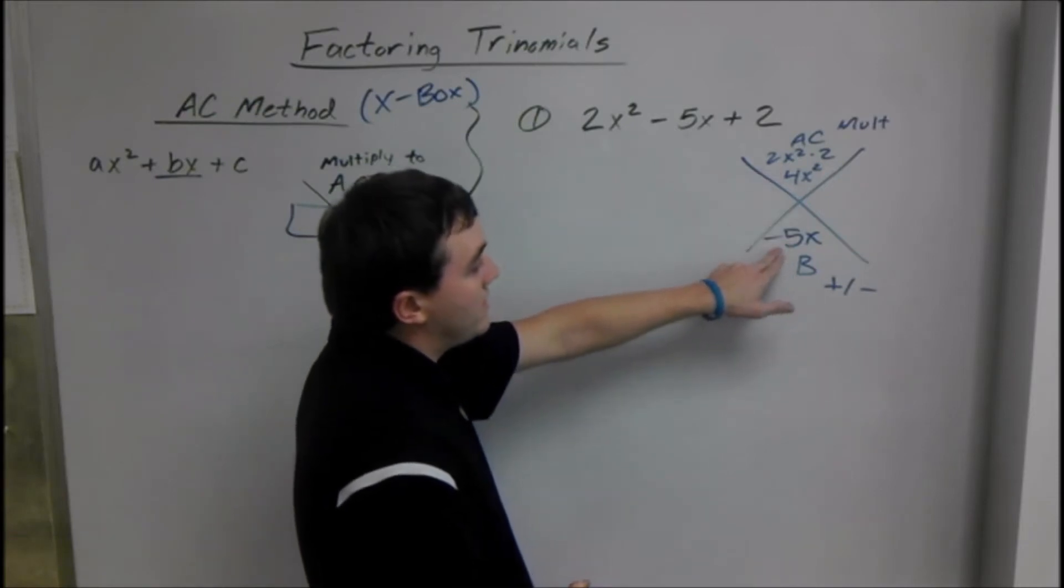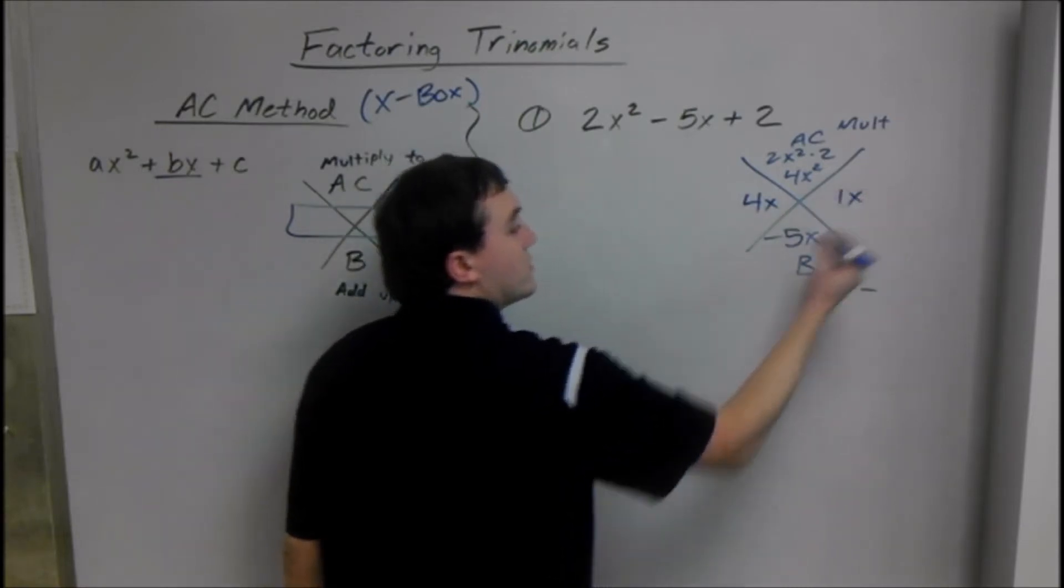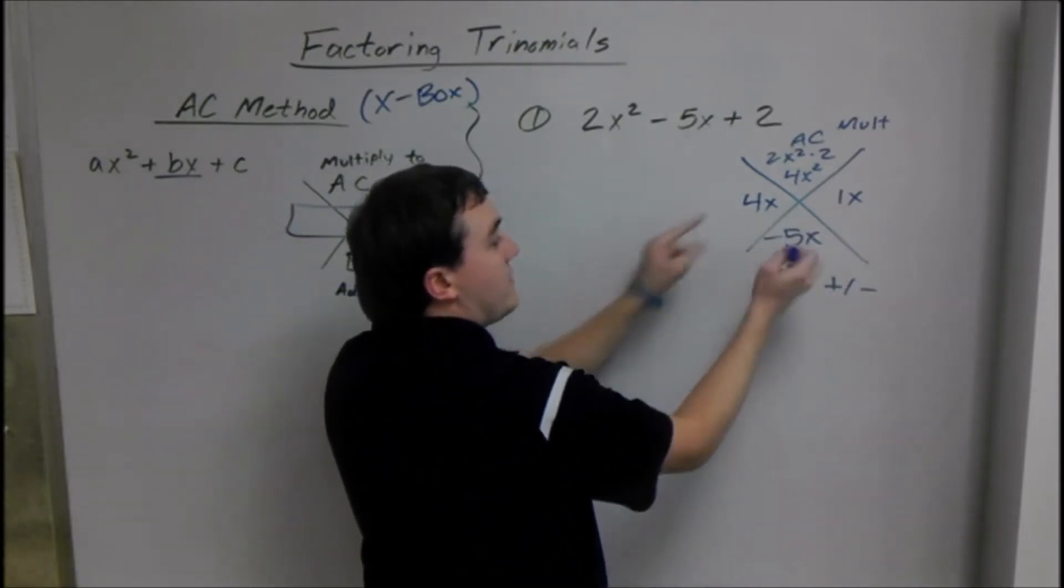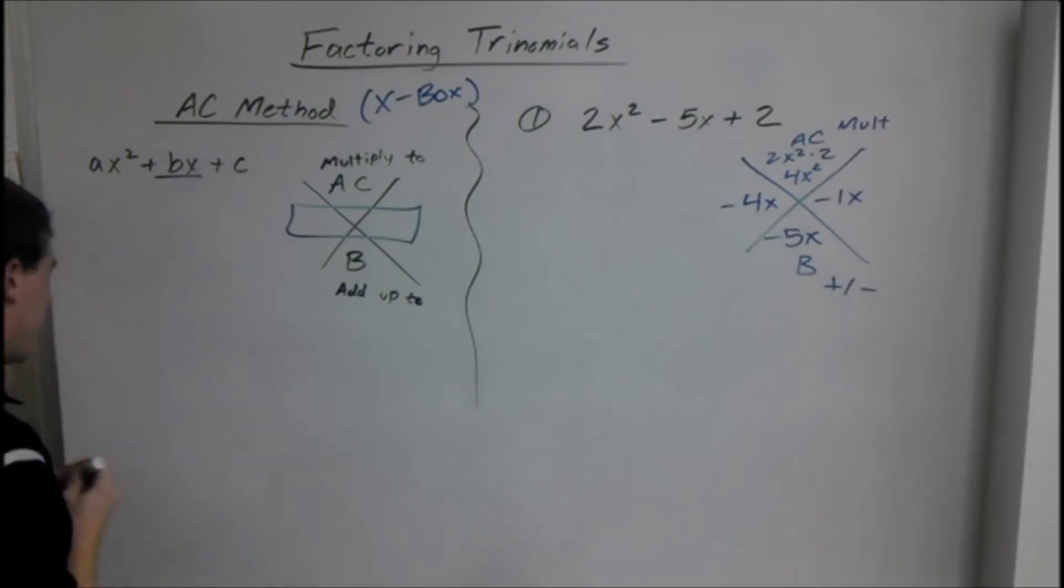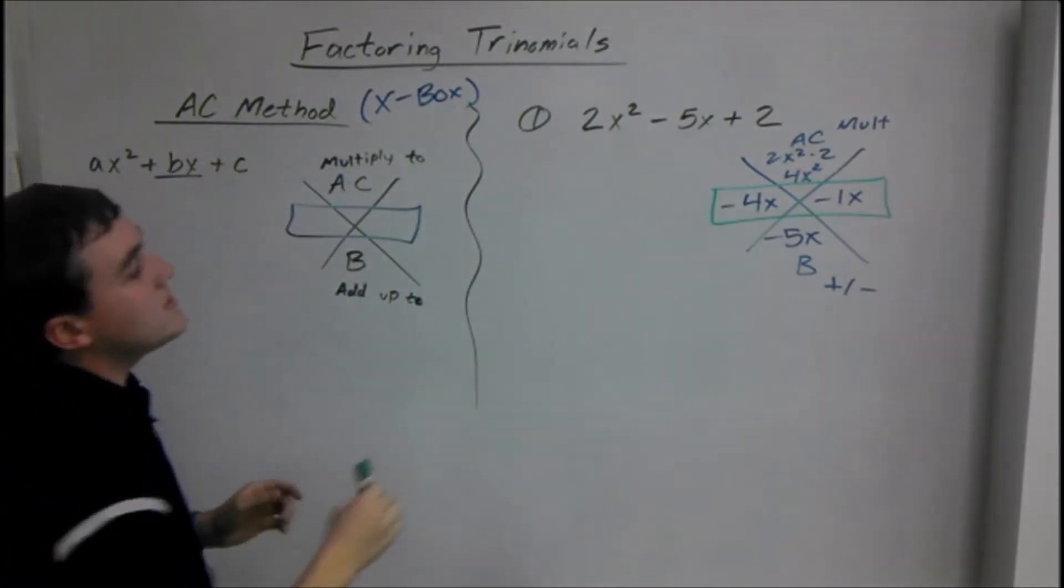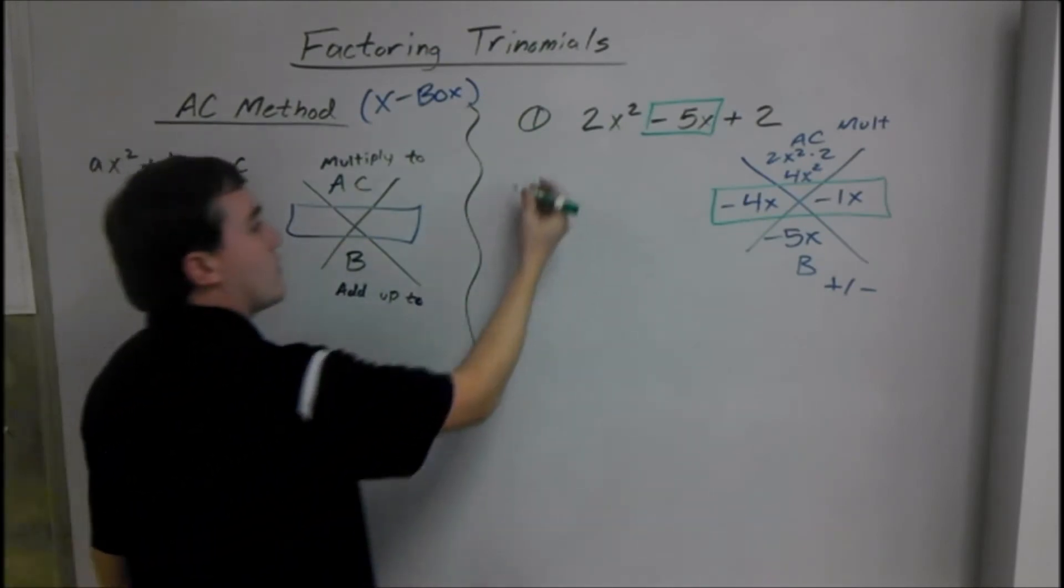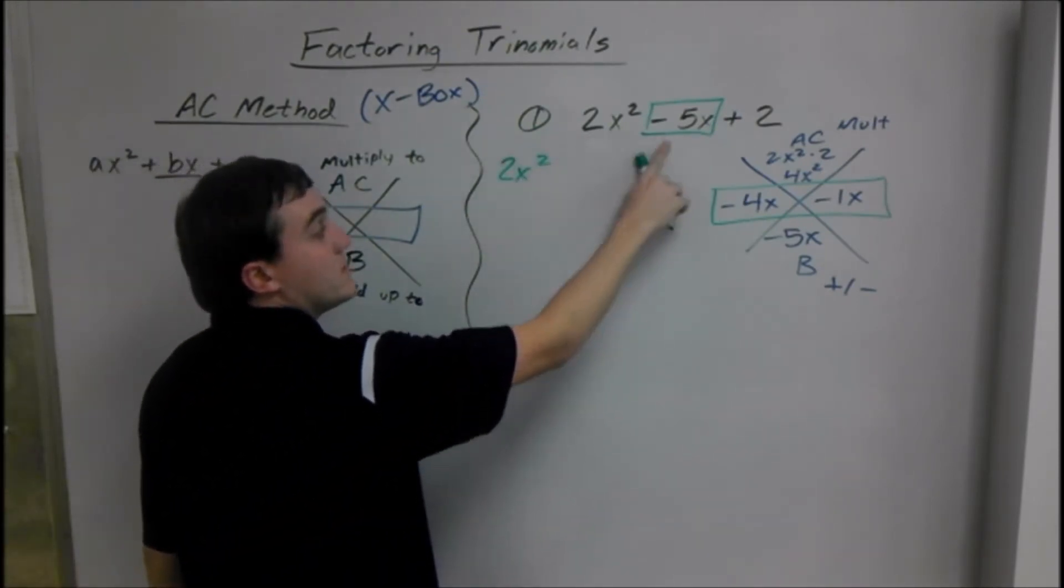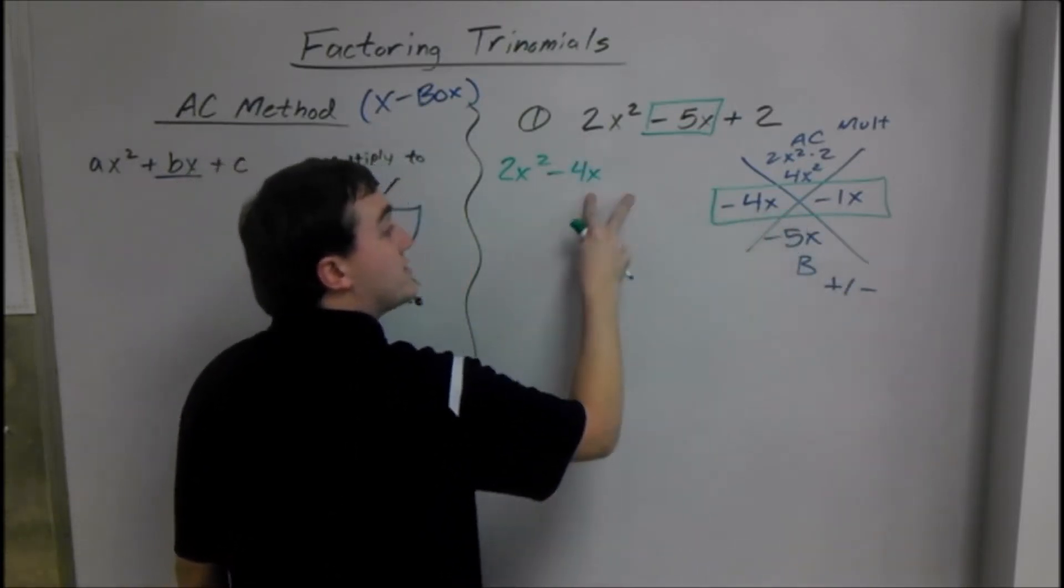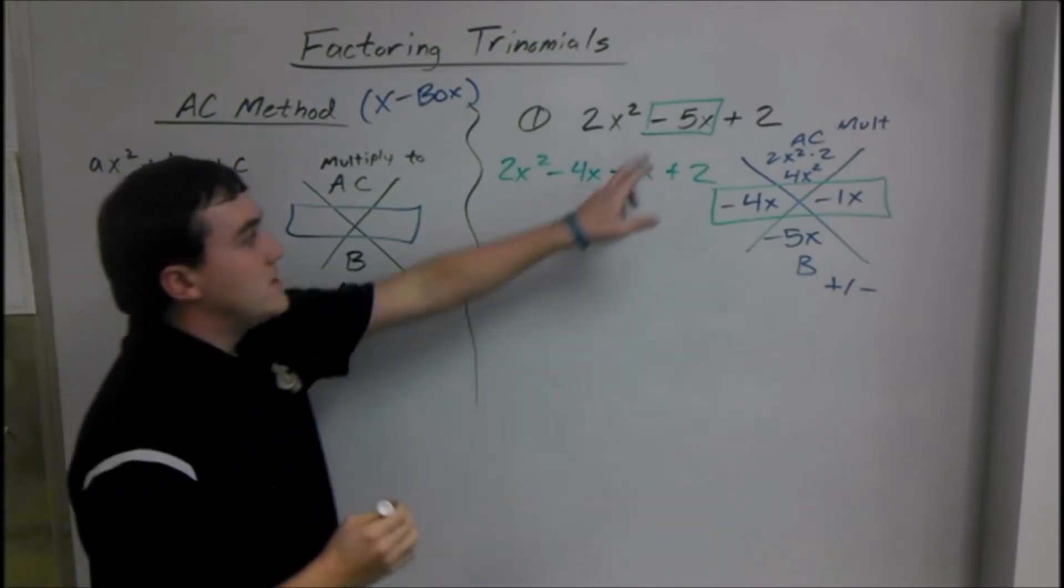We need two things that multiply to equal 4 that add up to negative 5. So two things that multiply to equal 4 that add up to negative 5 would be 4X and 1X, and their signs have to add up to negative 5, so we know they're both negative. Here's where the Xbox method comes in. You take these and you replace the middle term. So we have 2X squared. First term stays the same. Negative 5X becomes negative 4X minus X.